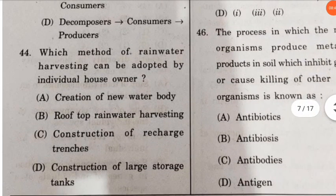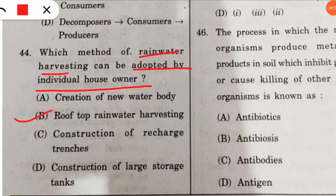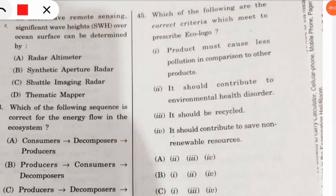Question 44: which method of rainwater harvesting can be adopted by an individual house owner? The correct option is option B — rooftop rainwater harvesting can be adopted by an individual house owner.